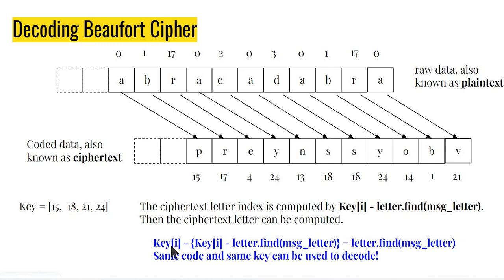If I were to encode this whole thing again, I'm basically doing key[i] minus this whole thing and then it tells me that I'm going to get back to my original letter and that's exactly what is going on. So, the message here is that the same code and the same key can be used to decode.